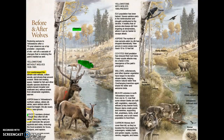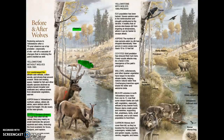Coyote populations jumped up because they no longer had competition from the wolves. This went on for almost 70 years. Biologists recognized this was a problem, and through lots of lobbying efforts, conservation work, education, and unfortunately some political fighting, wolves were reintroduced back in the mid-1990s. After reintroduction, the elk population decreased by about half — cut in half — because now they had a predator.